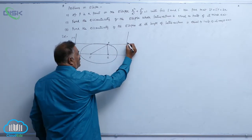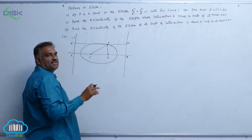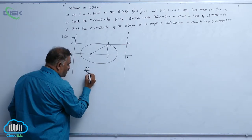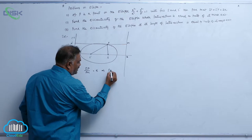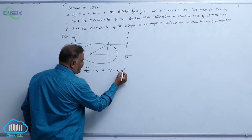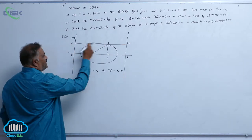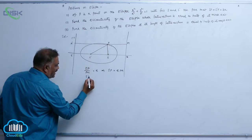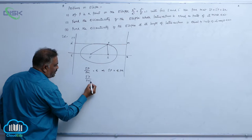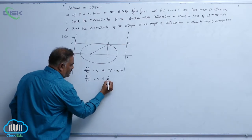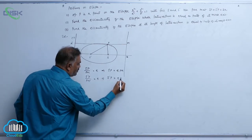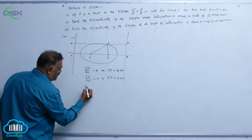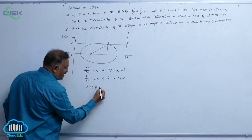Since P is a point on the conic, by definition SP divided by PM equals e, which implies SP equals e times PM. Similarly, since P is a point with respect to the second focus, S'P divided by PM' equals e, so S'P equals e times PM'.